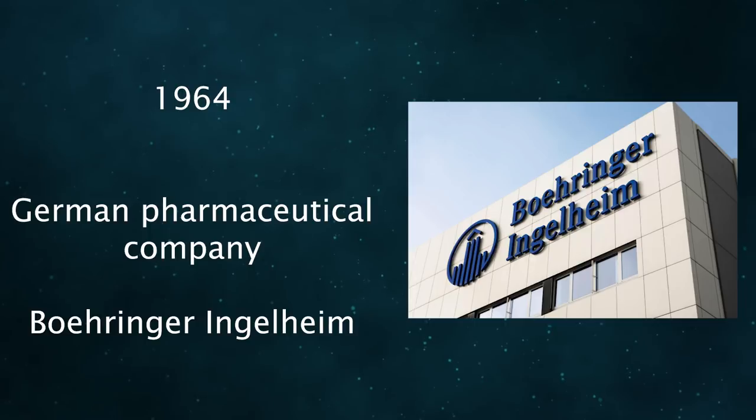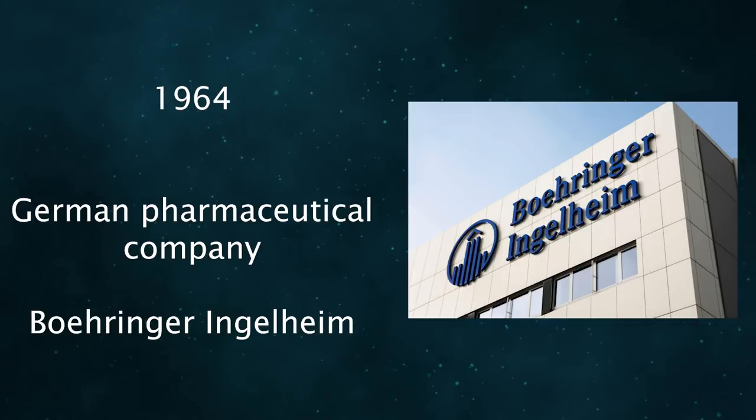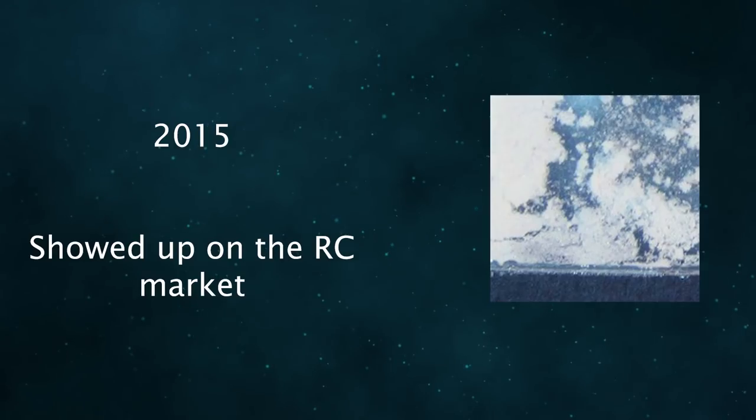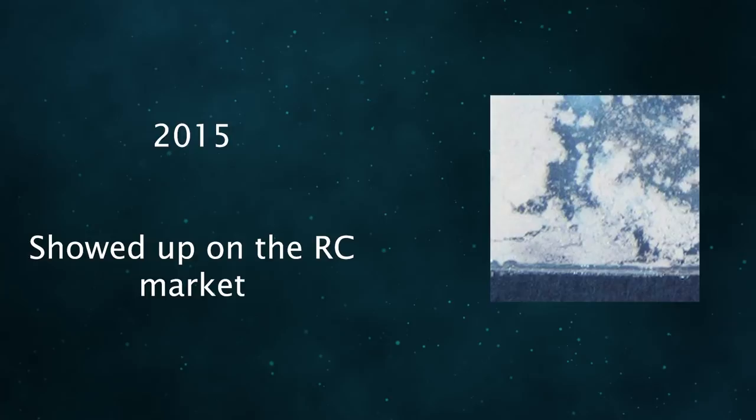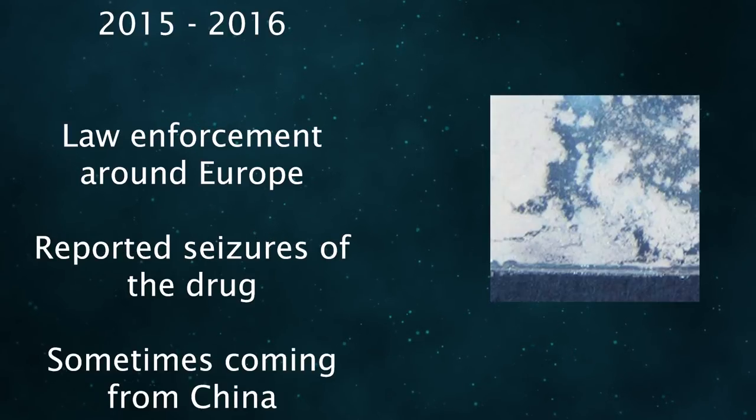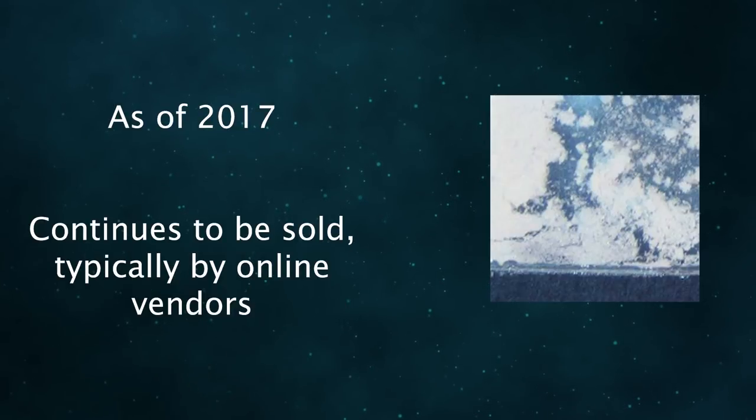The drug was originally patented in 1964 by a German pharmaceutical company that was investigating various amino ketone derivatives. Essentially nothing happened with the drug until 2015, when it showed up on the research chemical market. Between 2015 and 2016, seizures by law enforcement were reported around Europe. As of 2017, it continues to be sold, typically by online vendors.